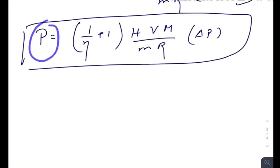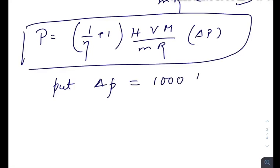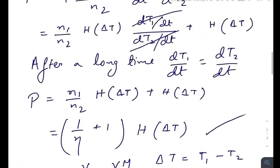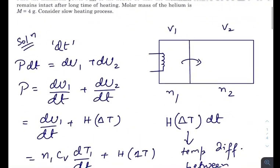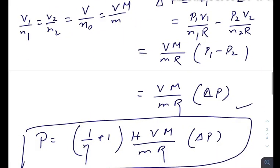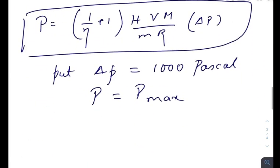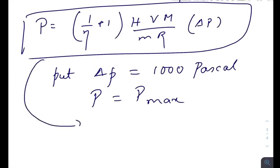Now just put ΔP equals to 1000 pascals. You will get the maximum power source that can be utilized so that this membrane does not break up in the middle.